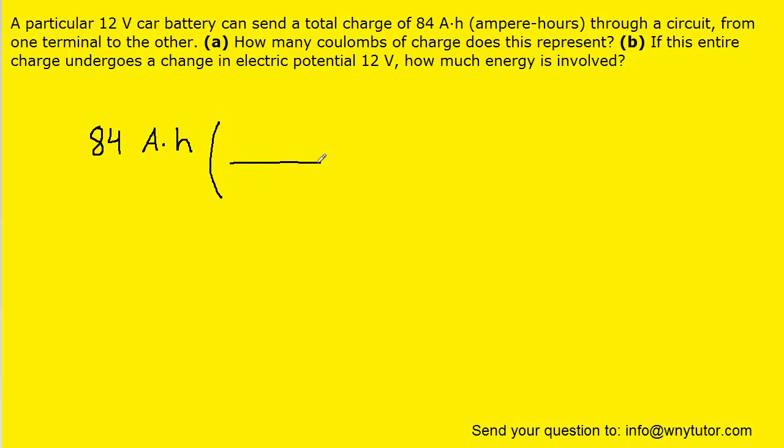Now we recall that one amp is equivalent to one coulomb per second. And so if we set up the conversion in this manner, we can see that the amps here in the numerator will cancel with the amps here in the denominator.